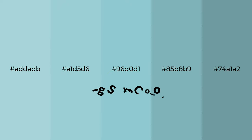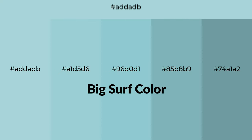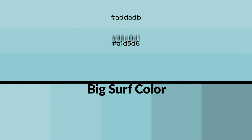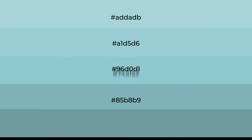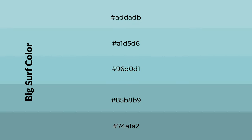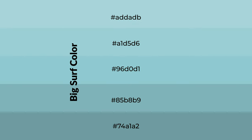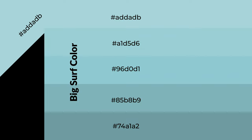For your next project, to generate tints of a color, we add white to the color, and tints create light and exquisite emotions. To generate shades of a color, we add black to the color, and it is used in patterns and 3D effects.